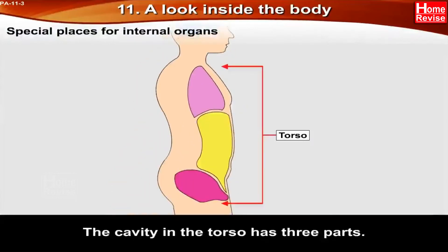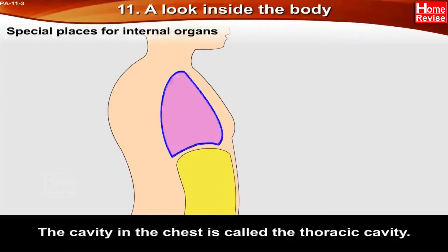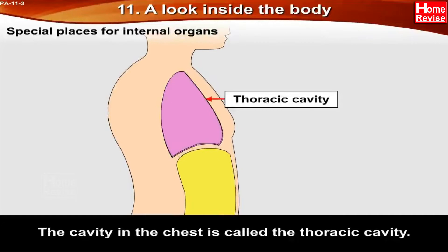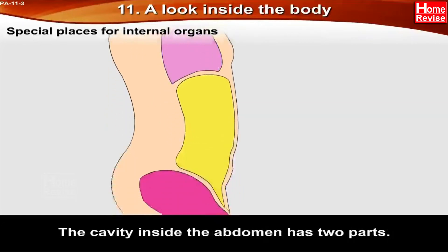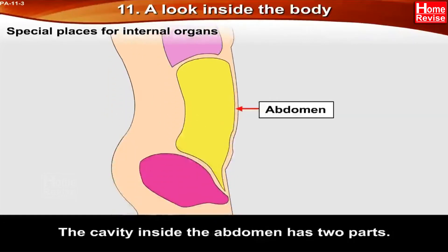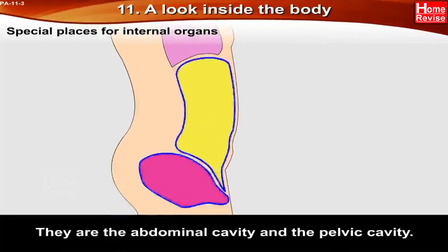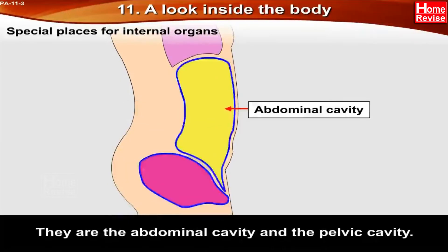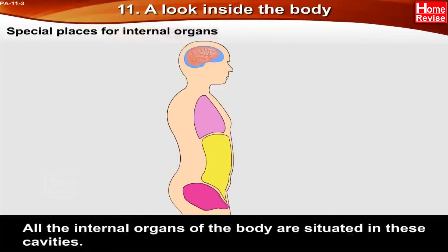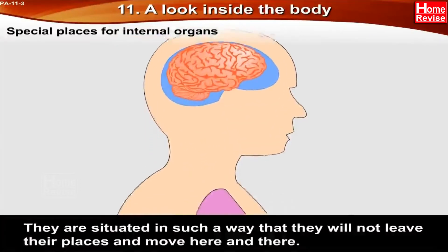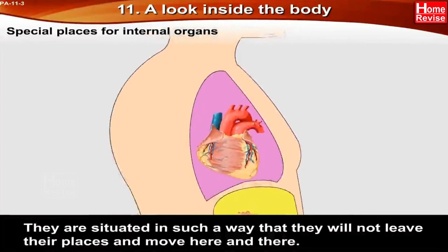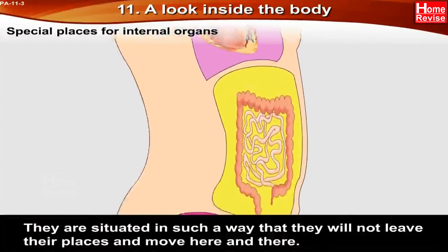The cavity in the torso has three parts. The cavity in the chest is called the thoracic cavity. The cavity inside the abdomen has two parts: the abdominal cavity and the pelvic cavity. All the internal organs of the body are situated in these cavities in such a way that they will not leave their places and move around.